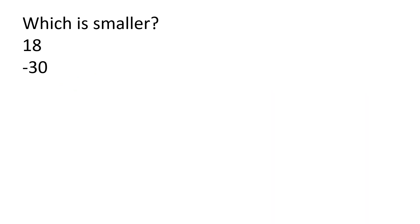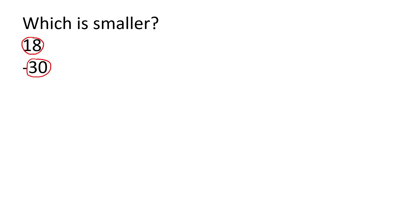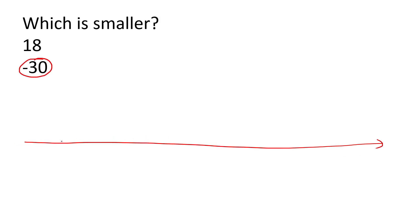Now, this is going to be quite interesting — which number is smaller? Some of you might say that it's the number 18, because you're looking at 18 and you're looking at 30. But remember, this is not 30 — this is minus 30. So if you had to look on a number line, we know that 0 is in the middle, and then all the positive numbers go this way. I'm just going to count in 3s: 3, 6, 9, 12, 15, 18.